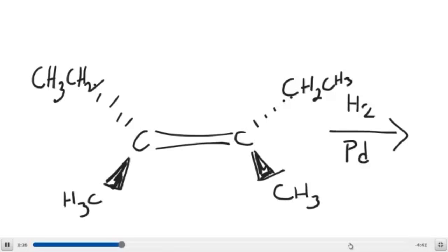In class I've said that this is the swimming pool reaction. Your little alkene is completely flat because the two carbons in the double bond are sp2 hybridized, so they're flat. You can either do a belly flop or back flop onto the metal catalyst.